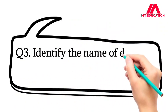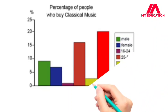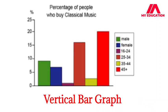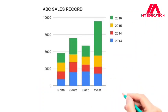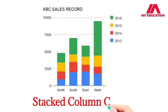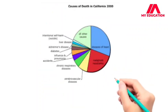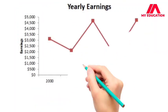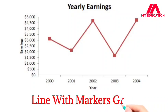Question 3: Identify the name of different graphs. Vertical bar graph, column chart, circle graph, line with markers graph.